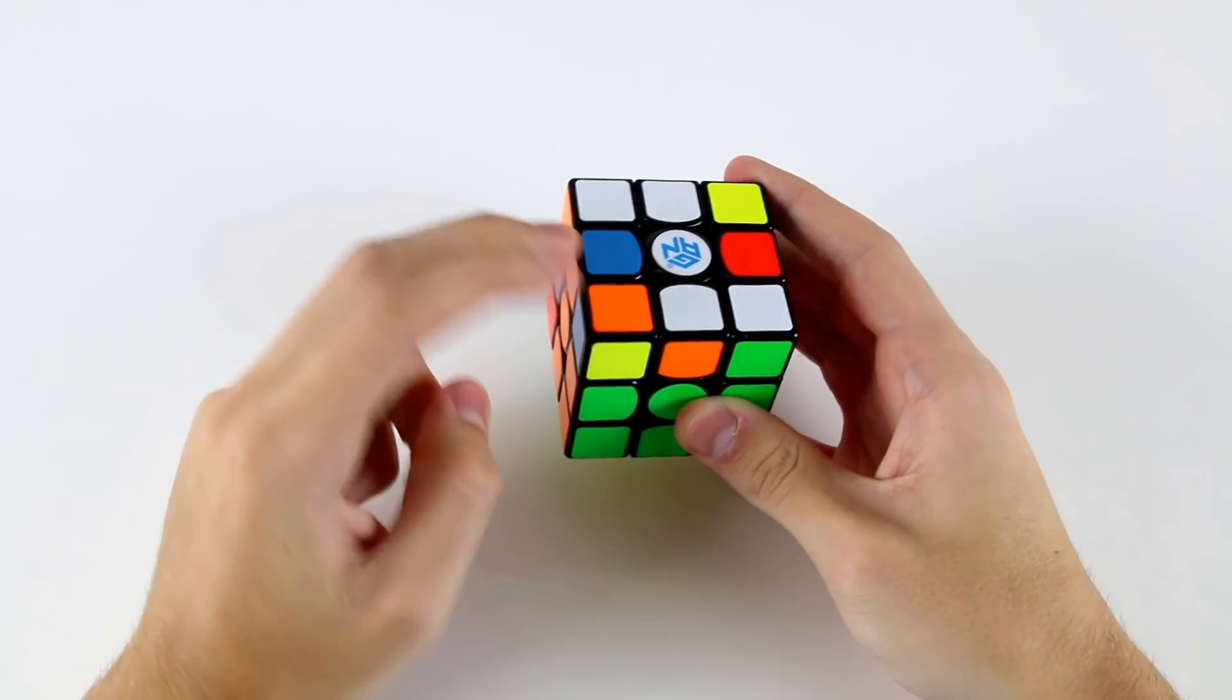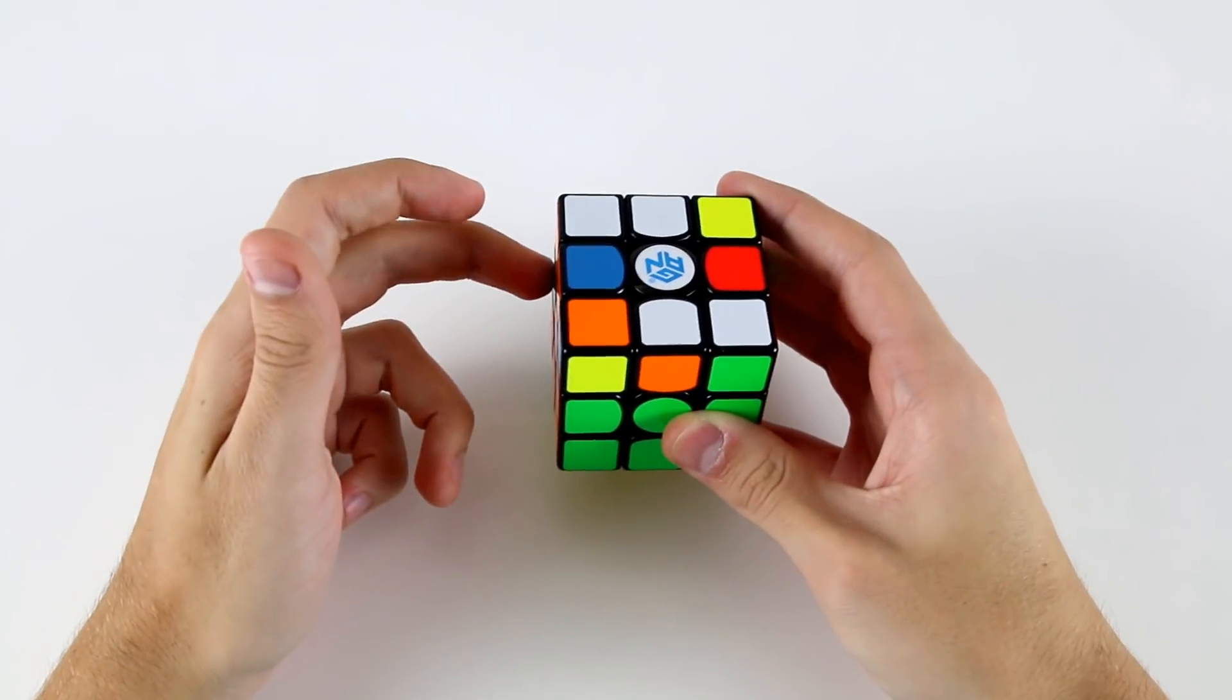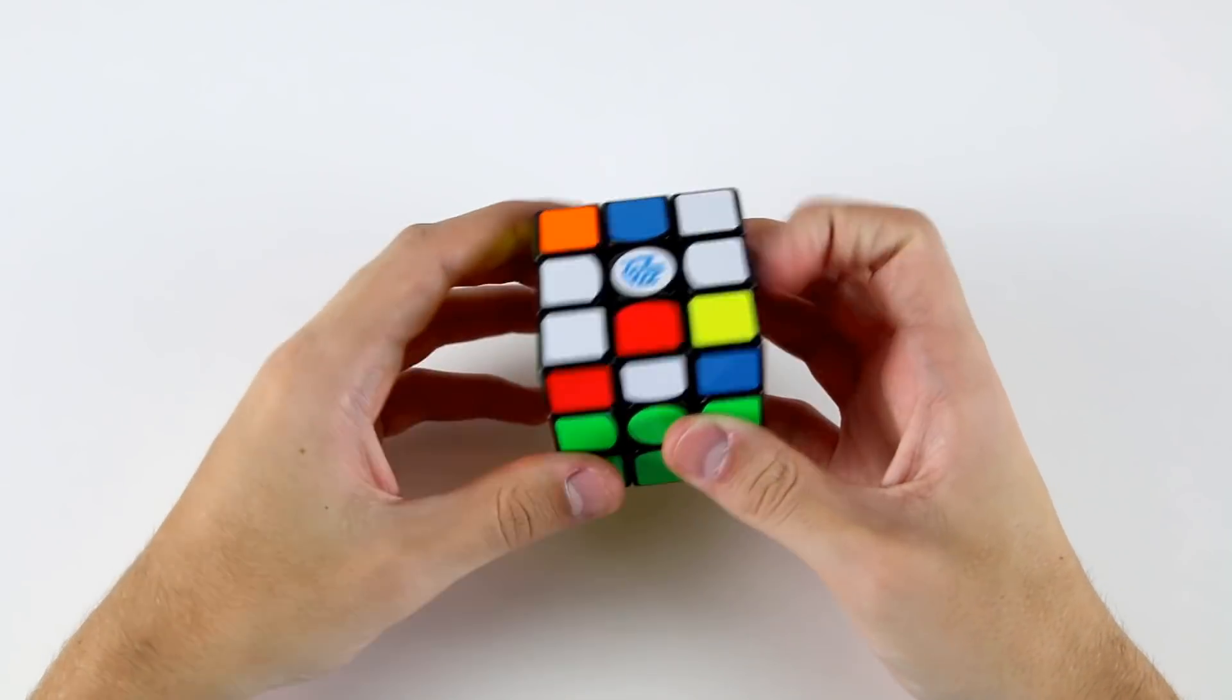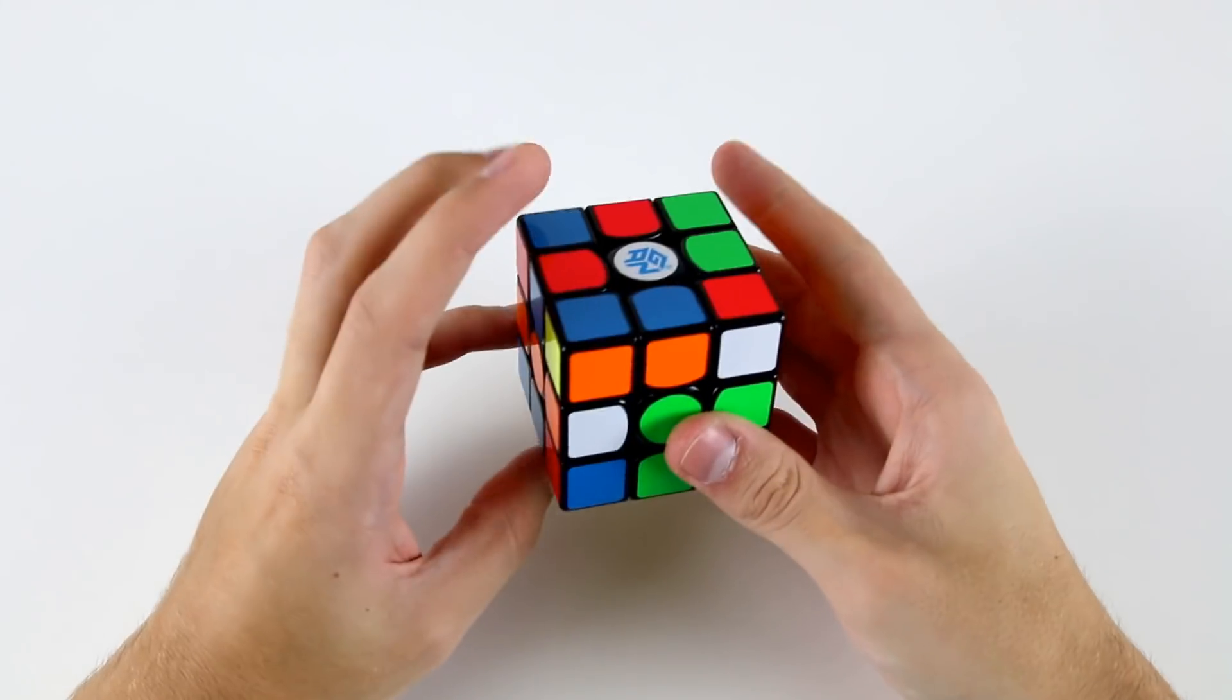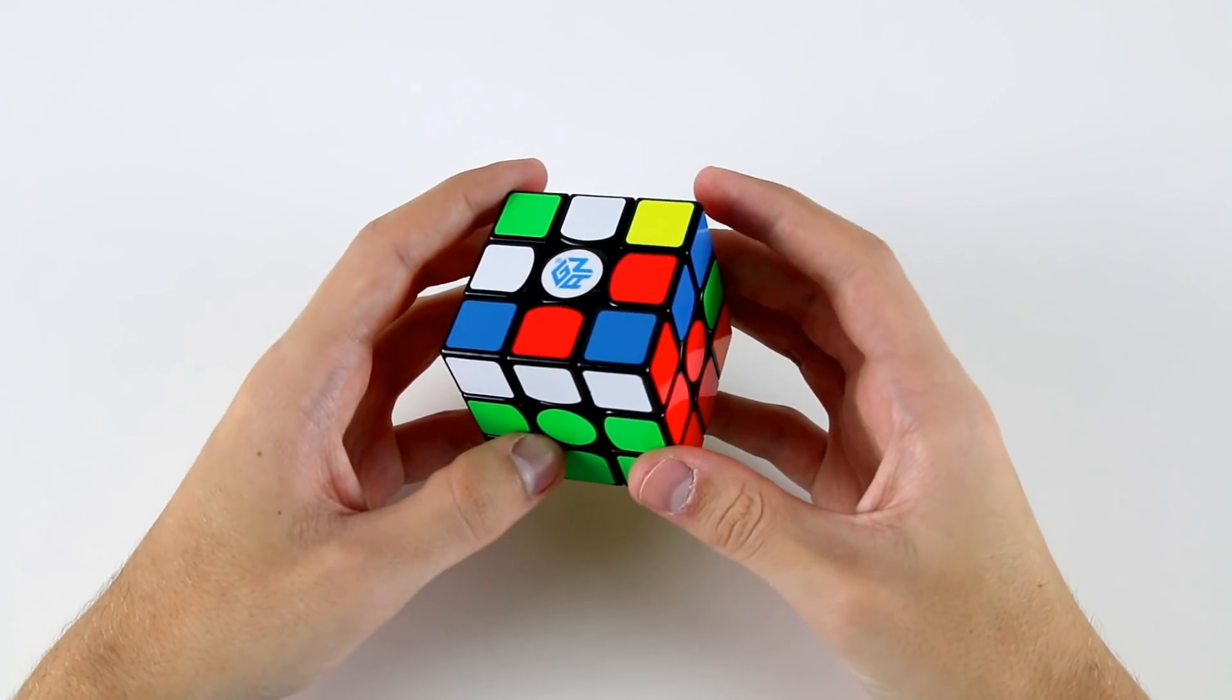Now I've got this F2L case here over on the left hand side and they need to go into the back left slot. I can do a u, l' u2, l' u2, l2, u, l2, u, l, like that.